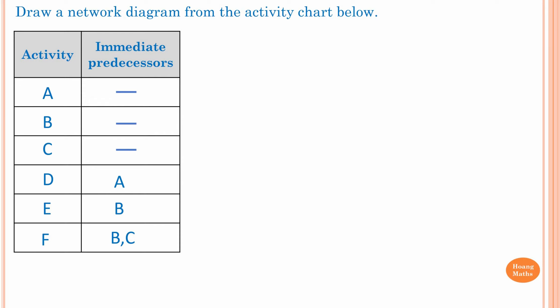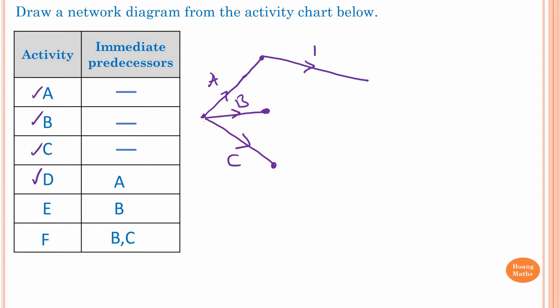Next example. We can see Activity A, B, and C have no prerequisites or immediate predecessors. So I draw these first — Activity A, Activity B, and Activity C. Activity D has an immediate predecessor of A, meaning we need to complete Activity A before moving on to D. So starting from A, I draw out Activity D.